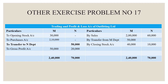On the credit side, sales are 2,000,000 for M department and 60,000 for N department, along with a transfer from M department. Closing stock is 40,000 for M department and 10,000 for N department. The debit balance as gross profit is 50,000 and 20,000 for M and N departments respectively. The grand total is 240,000 and 70,000 for both departments.